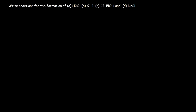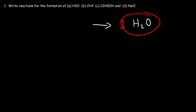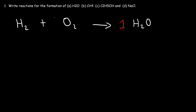If you want to write a reaction that corresponds to the enthalpy change of formation of a substance, here's what you need to do. You need to put that substance on the right side, and you want the coefficient to be 1. On the left side, you want to write the elements that make up this compound in their natural states. So we have elemental hydrogen, which exists naturally as hydrogen gas, and water also consists of oxygen. To balance it, we need to put a 1/2 in front of O2 because we only have one oxygen atom on the right side. And so that's how you can write the formation reaction for water.